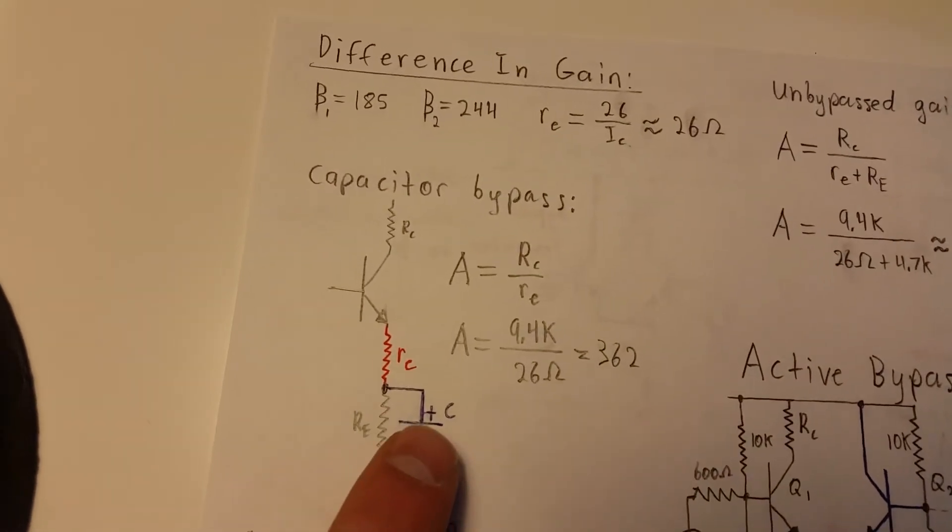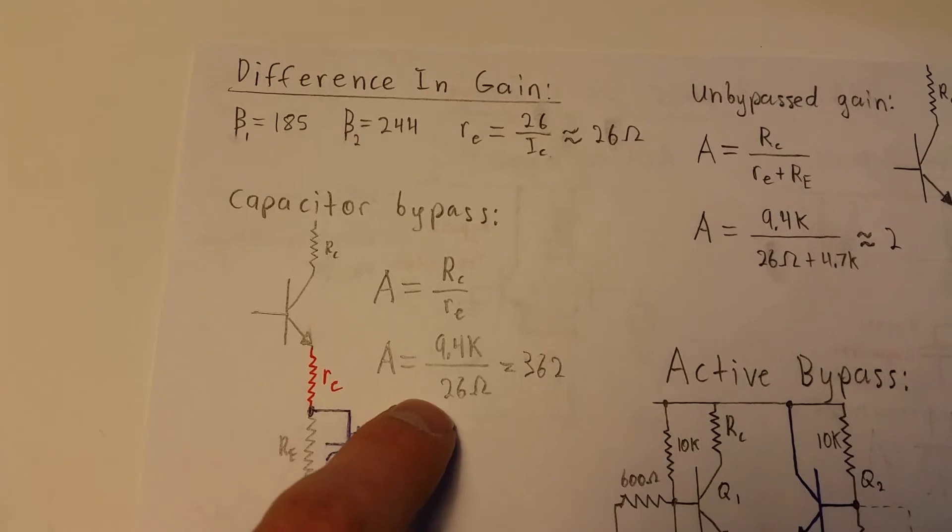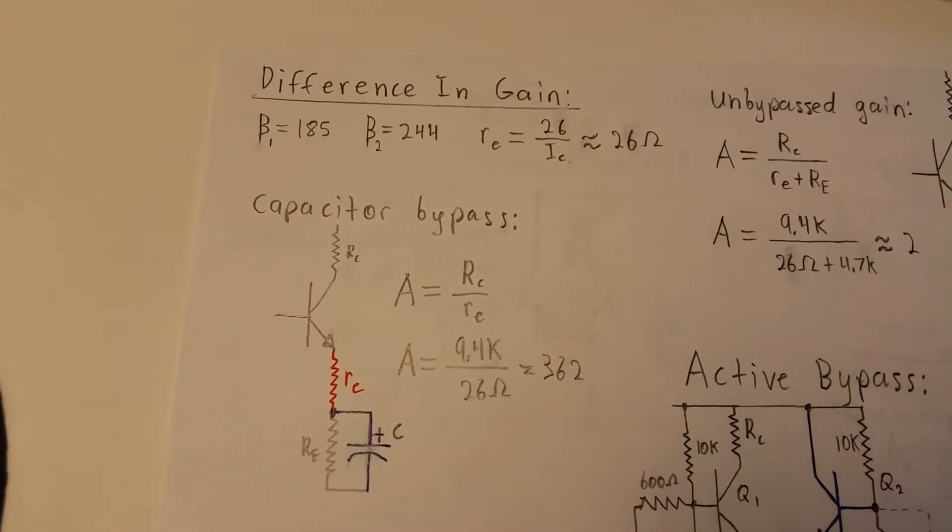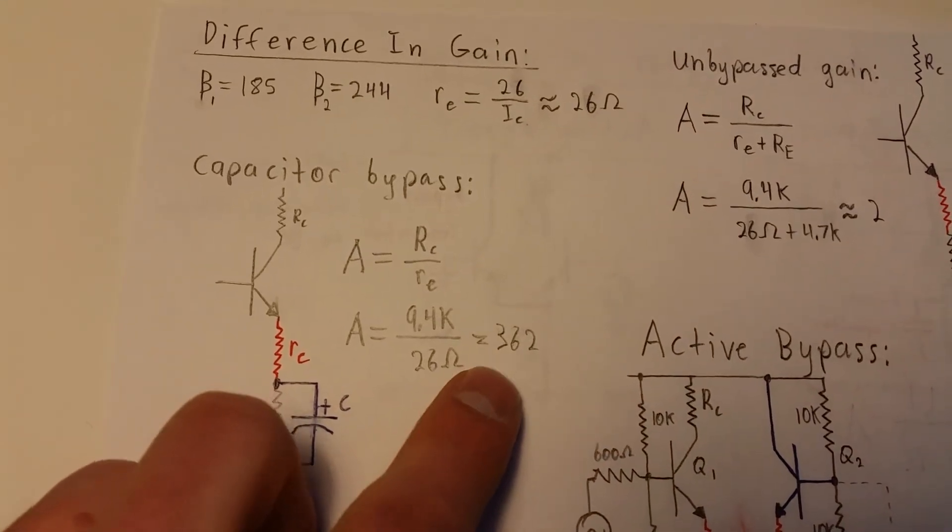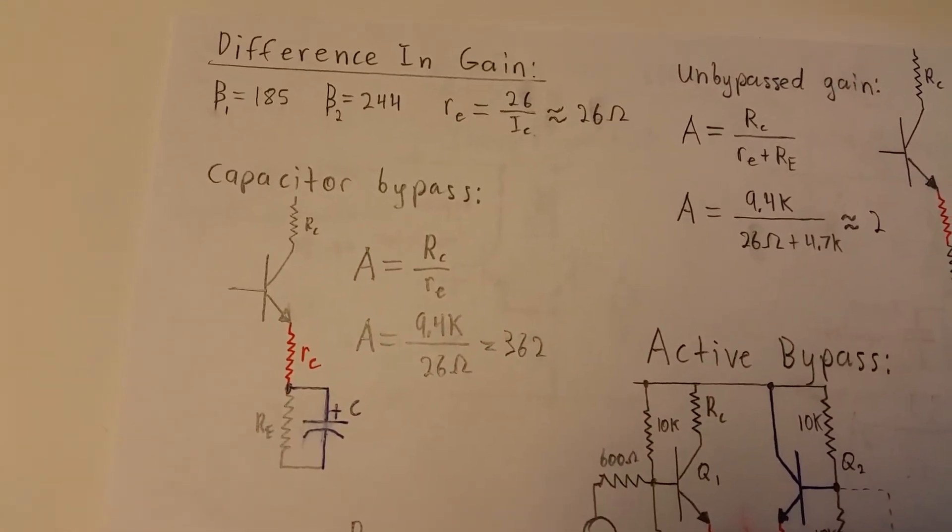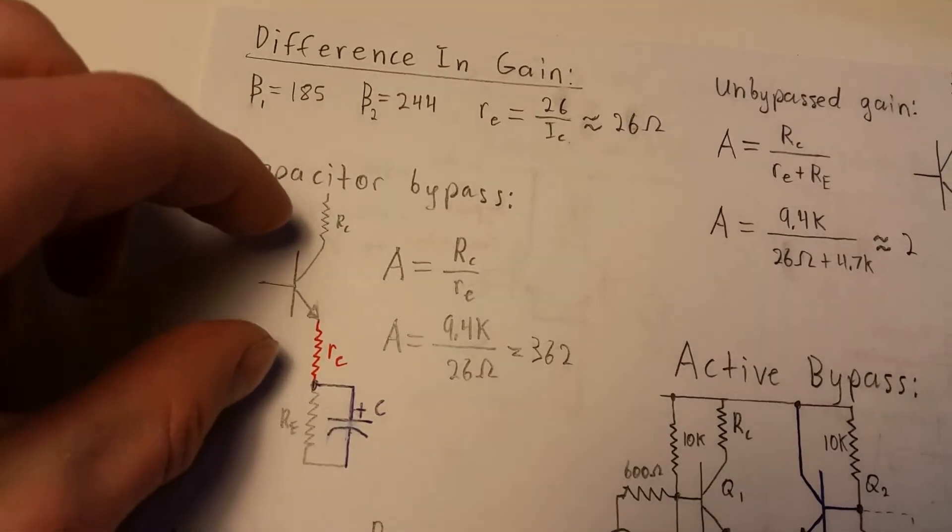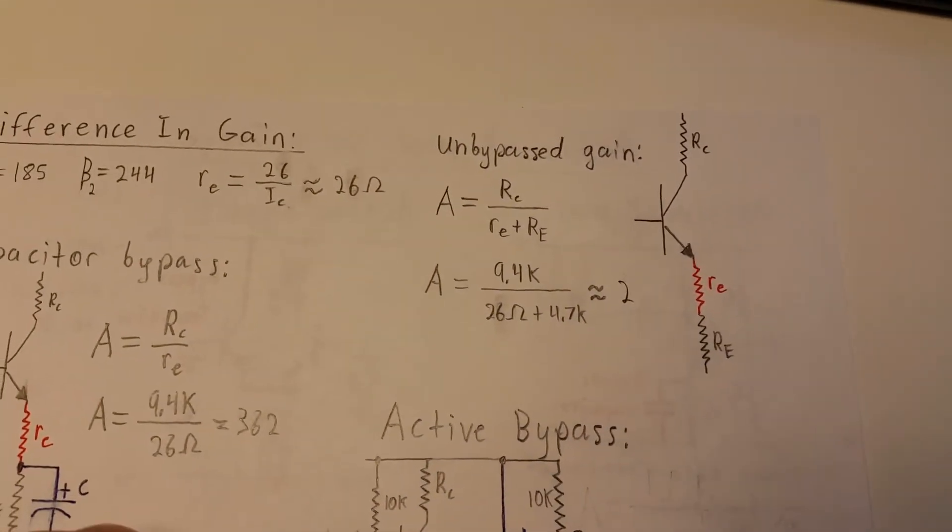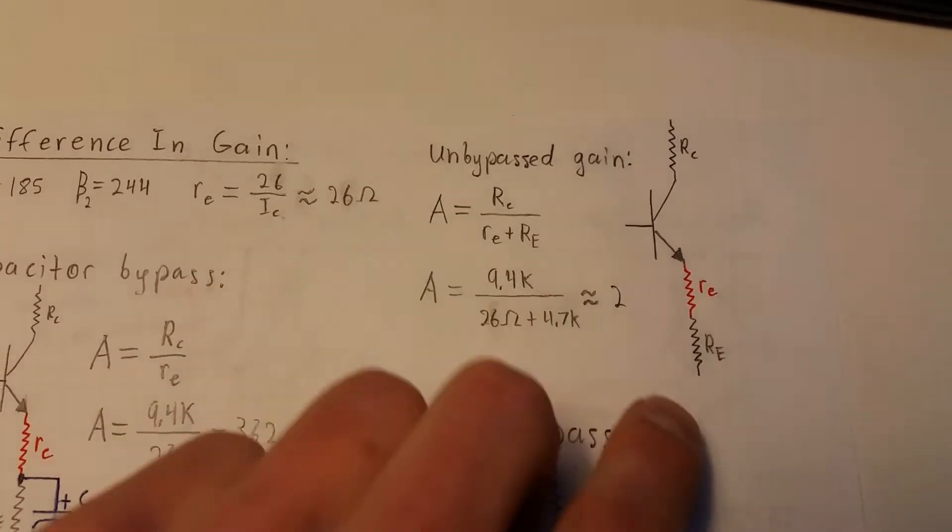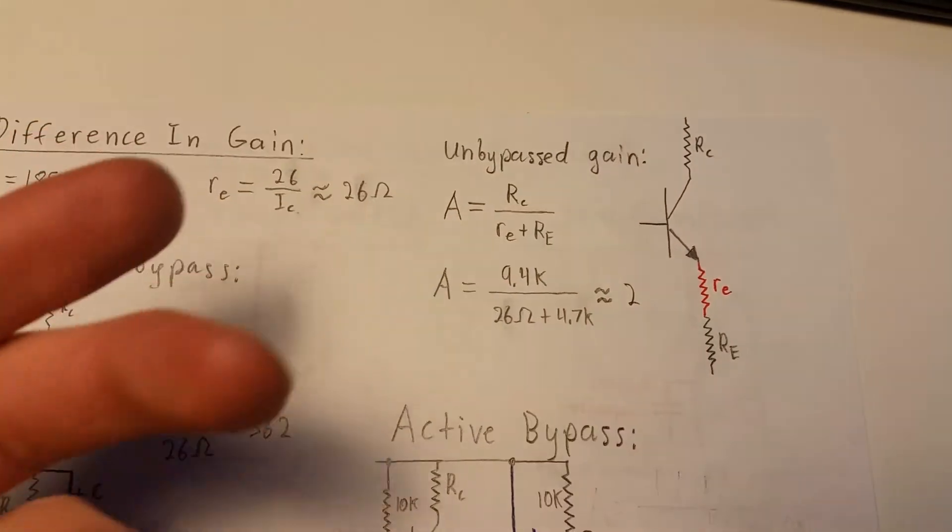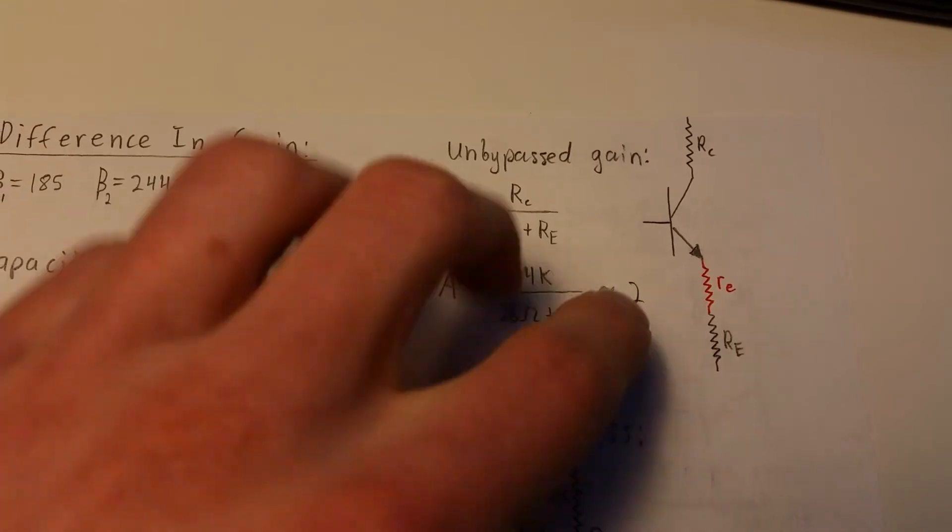With a capacitor bias, your gain is basically equal to RC over RE. It's kind of an assumption. But basically, your gain can't exceed this value for this setup because it's like you're eliminating that and dealing with these two. But with an unbypassed, in this case, you get a gain of two, a little less than two actually, but almost two, because this is unbypassed.